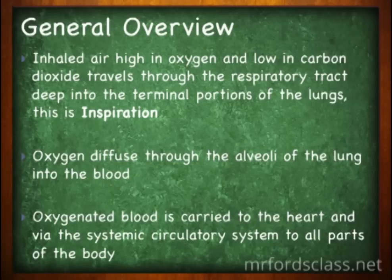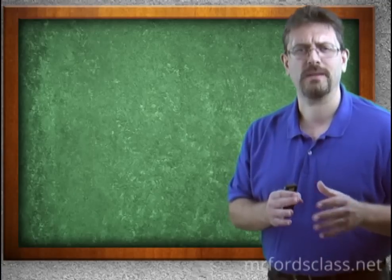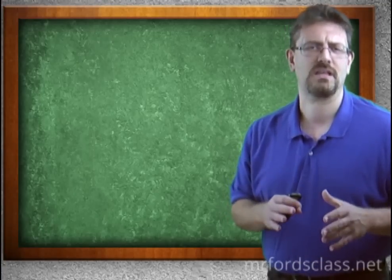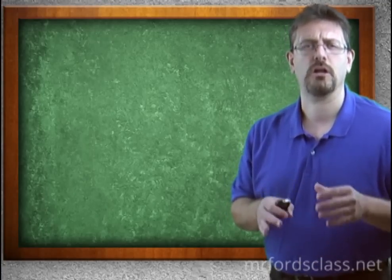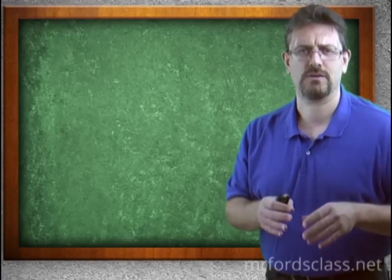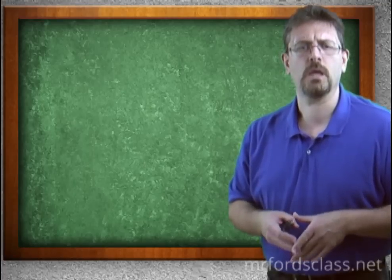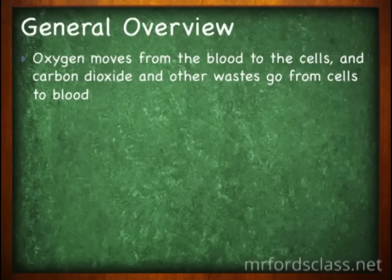Oxygenated blood is carried to the heart and via the systemic circulatory system to all parts of the body. If you're unsure what the systemic circulation is, please check out the cardiovascular series of videos that we have available. Oxygen is going to move from the blood to the cells and carbon dioxide and other wastes go from the cells to the blood.